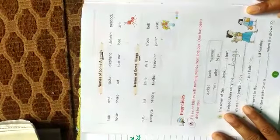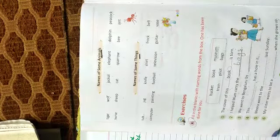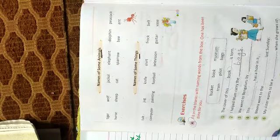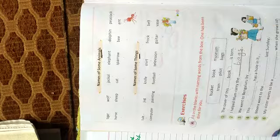Names of some animals: tiger, wolf, jackal, elephant, etc. All these are naming words for animals.